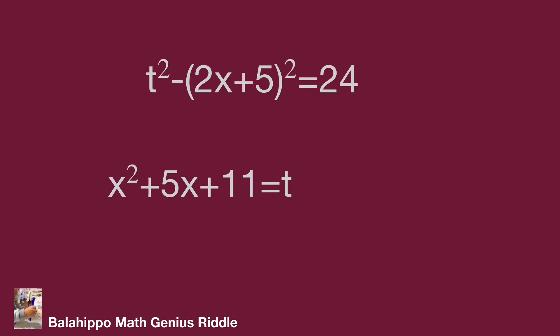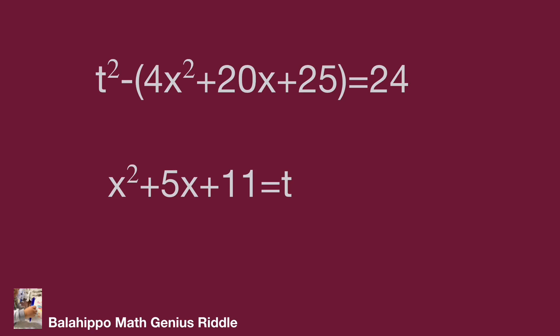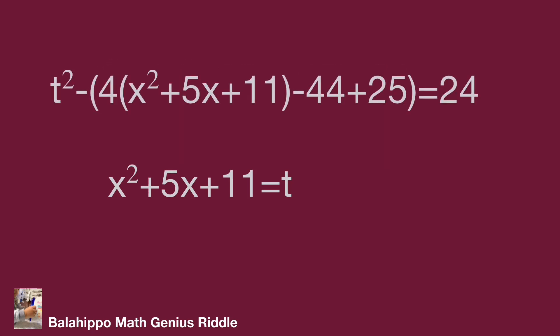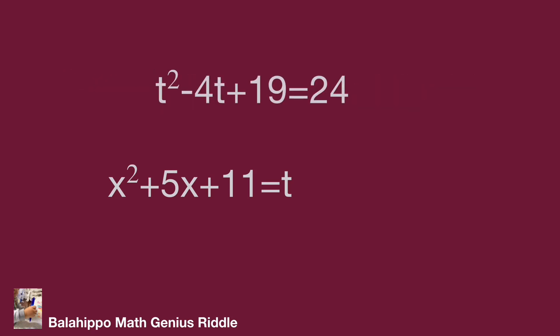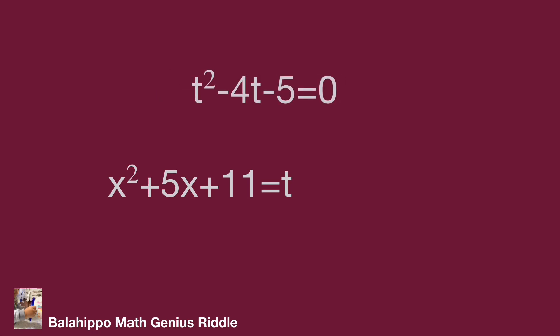Expand quantity 2x plus 5 squared as 4x squared plus 20x plus 25. Then, comparing with our definition x squared plus 5x plus 11 equal to t, we adjust: 4x squared plus 20x plus 44 minus 44 plus 25. Refreshing x squared plus 5x plus 11 as t, and minus 44 plus 25 equals negative 19, it becomes t squared minus 4t minus 19 equal to 24. Simplifying: t squared minus 4t minus 5 equal to 0.